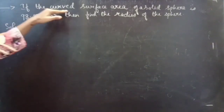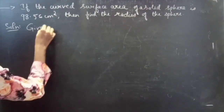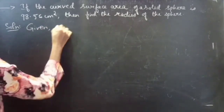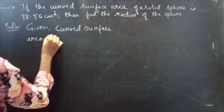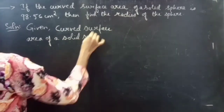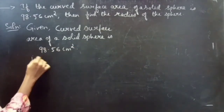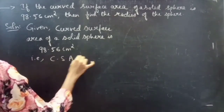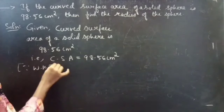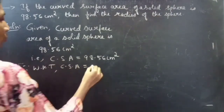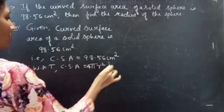We are given that the curved surface area of a solid sphere is 98.56 cm², that is CSA of sphere equals 98.56 cm². Since we know that the curved surface area of a sphere equals 4πr², in square units.